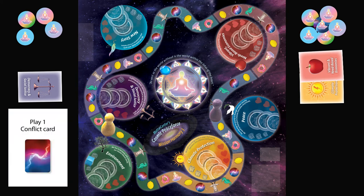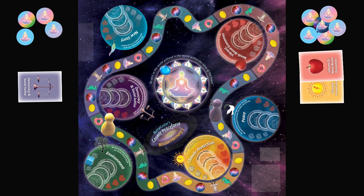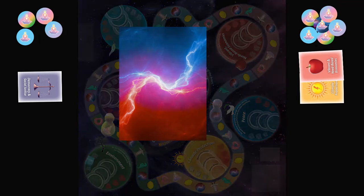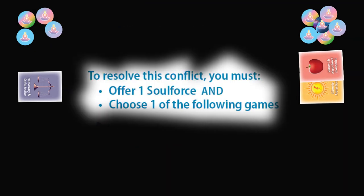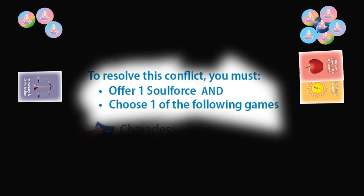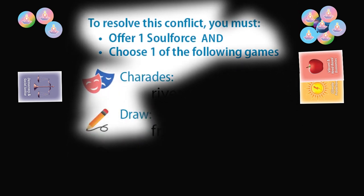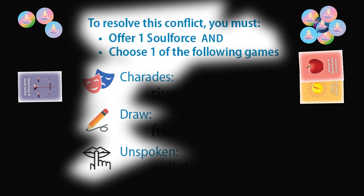To play it, I turn it over and it says play one conflict card, so I'm going to discard that strategy card and then pick up a conflict card. The conflict card says to resolve this conflict, you must offer one soul force and choose from the following games. I'm going to take a soul force token and put it in the main pile—I had to pay with my energy to enter into conflict. I have three choices: I can do a charade, a drawing, or an unspoken. I'm going to do a charade, but I have to make some noise so the camera can see me.